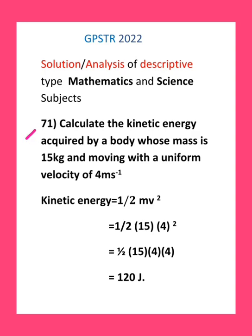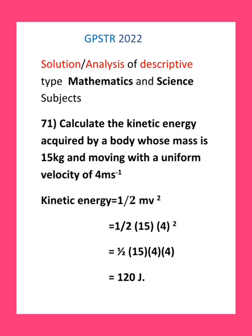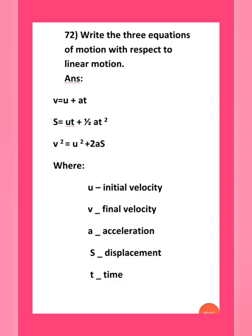Question number 71: calculate the kinetic energy acquired by a body whose mass is 15 kg, moving with a uniform velocity of 4 metres per second. The formula for kinetic energy is KE = ½mv². Substituting mass and velocity in SI units gives us KE = ½ × 15 × 4² = 120 joules.